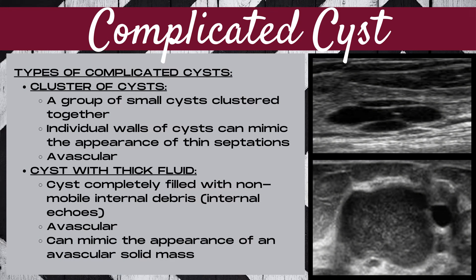The third type of complicated cyst is a cluster of cysts — a group of small cysts clustered together, like a cluster of grapes. The individual walls of the cysts can mimic the appearance of thin septations. A cluster of cysts should be avascular. The fourth type is a cyst with thick fluid, where the cyst is completely filled with non-mobile internal debris. There will be low-level internal echoes throughout the mass, and it should be avascular.